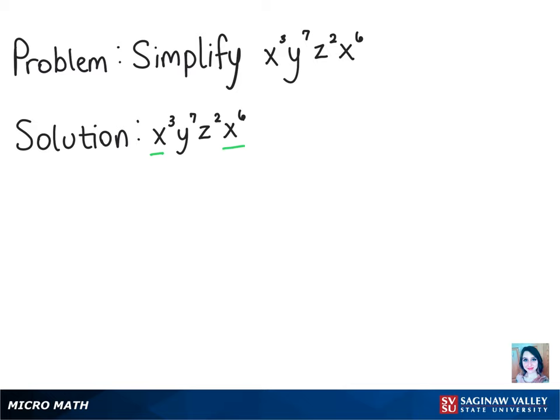So we can rewrite this where we have x to the power of 3 plus 6, the y to the 7th, and z squared, all multiplied.